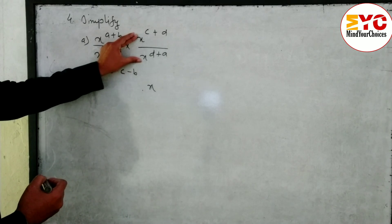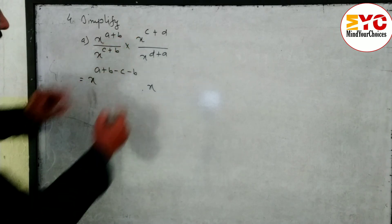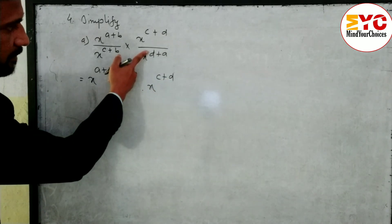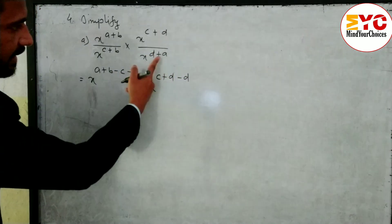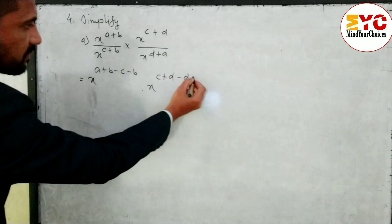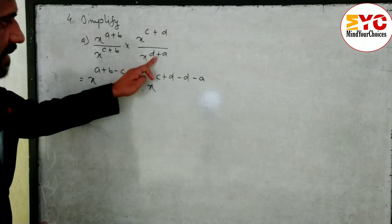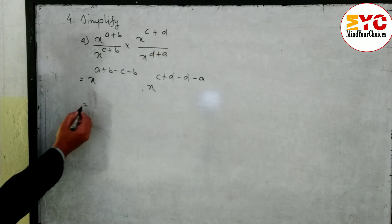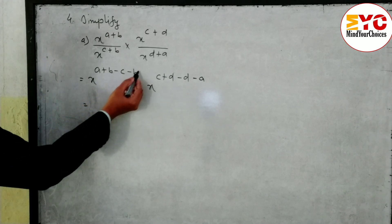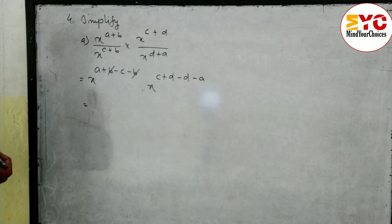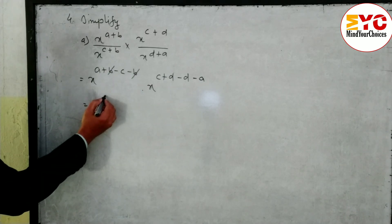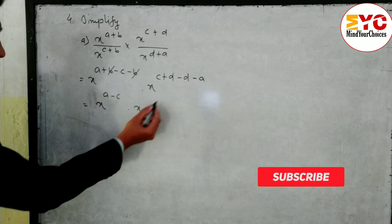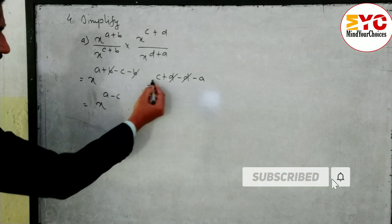The second part is also the same — base same, in divide subtract the power. We write c+d, then here is plus d so we write minus d, and plus a so we write minus a. Now you can see b and b cancel — one positive, one negative. Remaining: x power (a minus c). Similarly, d and d cancel, remaining: (c minus a).